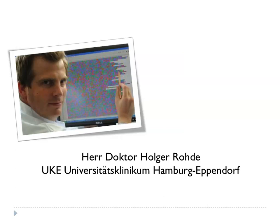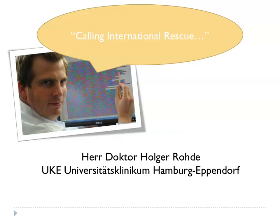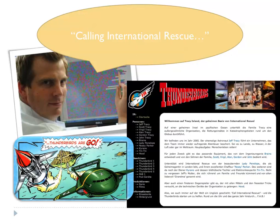If you come from the English-speaking world, you know one thing you should do in this situation: call on an organisation called International Rescue. I suspect Thunderbirds is not well known in Germany, but every schoolchild in England knows you call International Rescue and these wonderful rockets come and save you. So he called International Rescue, and something very dramatic happened — one of his Chinese associates said, why don't you send it to BGI and get it genome sequenced there? And so off it went to BGI in Shenzhen.